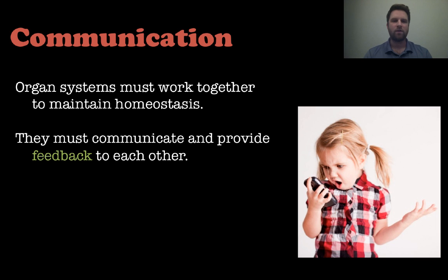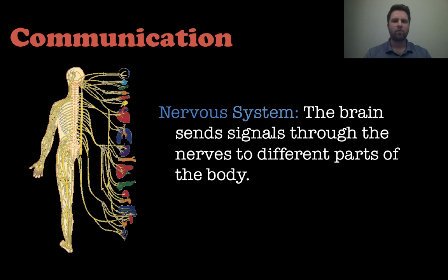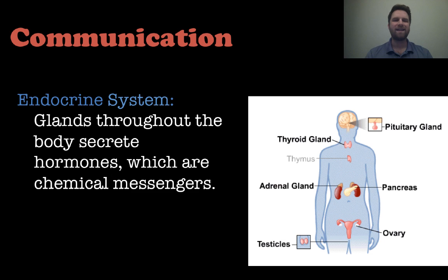Let's talk about communication. Organ systems have to communicate with each other to work together to maintain this internal environment, and they provide feedback to each other so they know what to do and when to do it. First, we look at the nervous system — the brain sending signals through all the different nerves to different parts of the body and organs. We also need the endocrine system, which is a series of glands throughout the body that secrete hormones — our chemical messengers. Hormones travel throughout the body and act on different target organs and tissues to elicit a response.